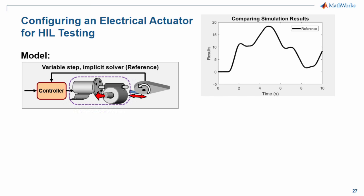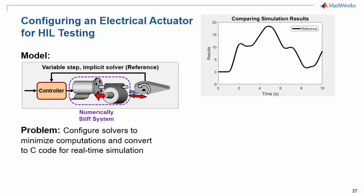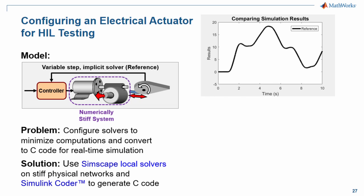However, portions of our model are numerically stiff. We need to configure the solvers of the model so that it is real-time capable and convert it to C code so we can put it on the hardware-in-the-loop system. We will use Simscape Local Solvers and Simulink Coder to do this.